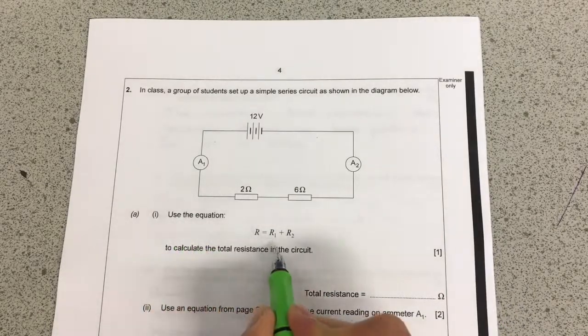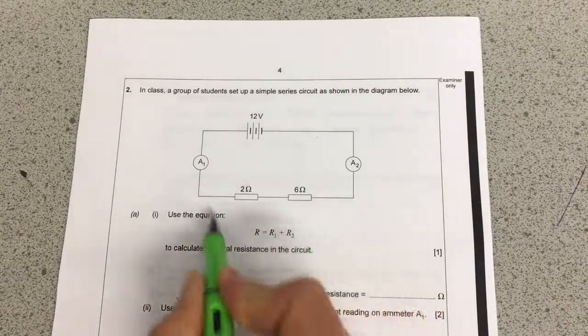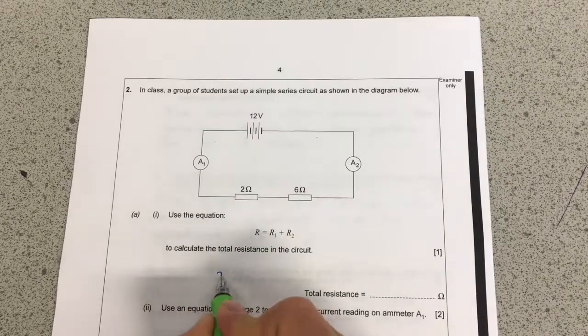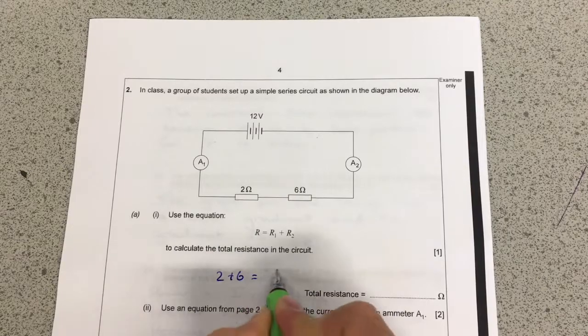And then we're asked to use the equation to calculate the total of these resistances by adding together R1 and R2. So I'm just going to do 2 plus 6 and that's going to give me 8.